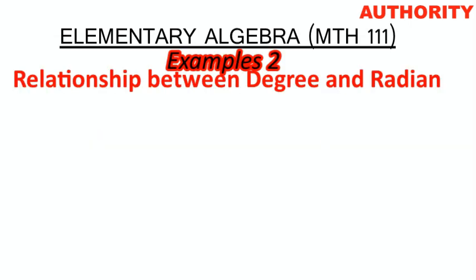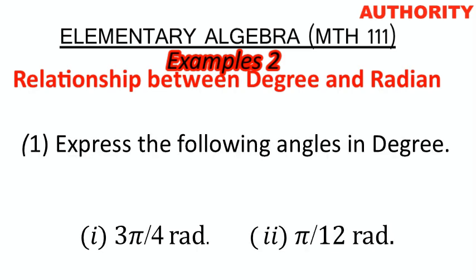I want to see the second example. The second example says: express the following angles in degrees. The two examples I want to pick are 3π/4 radians and π/12 radians. Let's pick the first one and go.